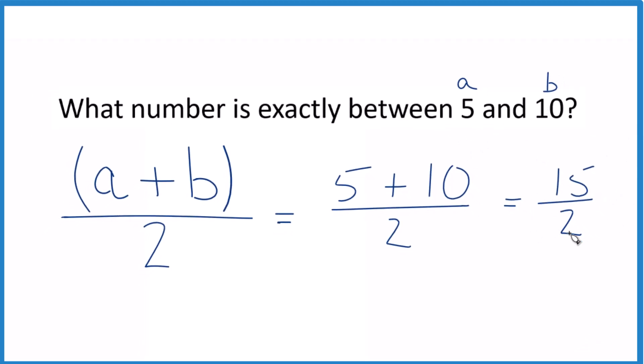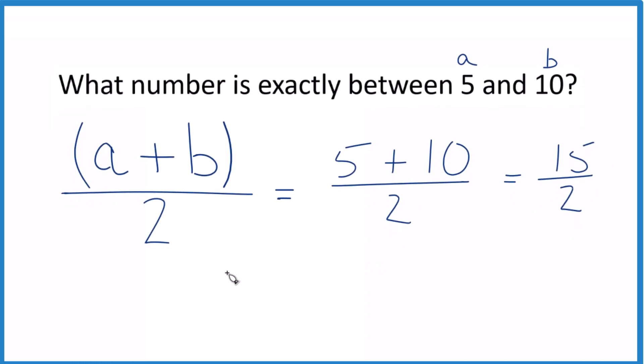This is an improper fraction. We could change this to a mixed number, because 2 goes into 15... 2 times 7 is 14 with 1 left over. We just bring the 2 across. So we could also call this 7 and a half.